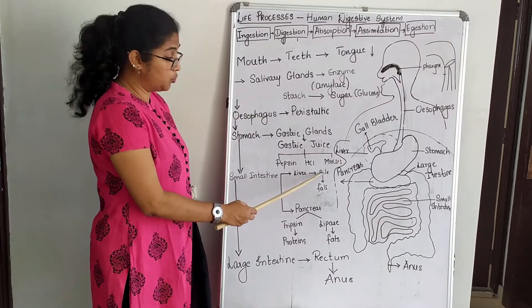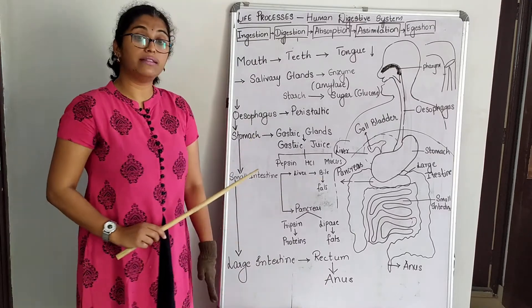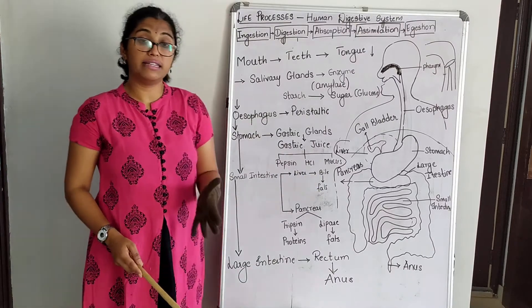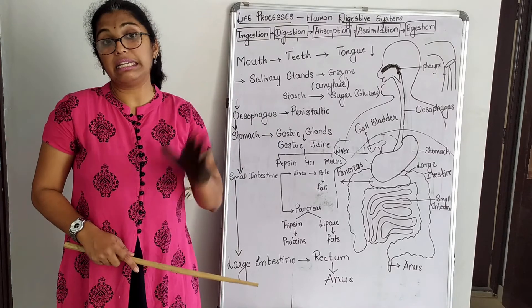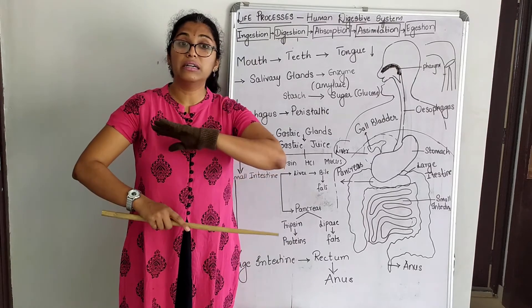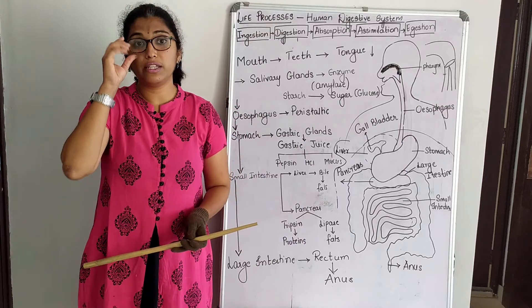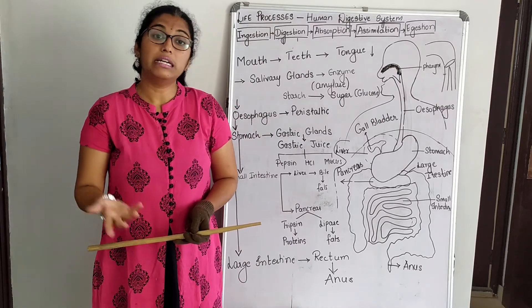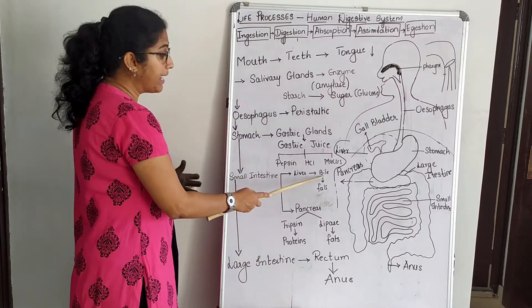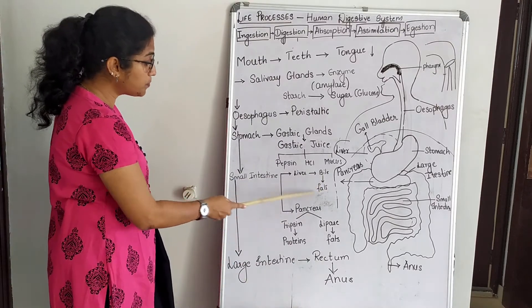The liver secretes bile juice, which is greenish-yellow in colour and is stored in the gallbladder for further concentration. Bile juice acts on the fat in the food — it emulsifies the fat present in the food. Emulsification means cutting down or removal of fat. For example, just as soap acts on dirt to remove it from clothes, bile emulsifies and removes the fat present in the food.